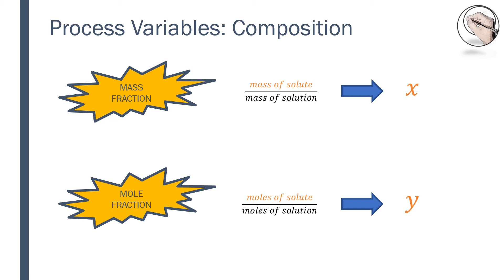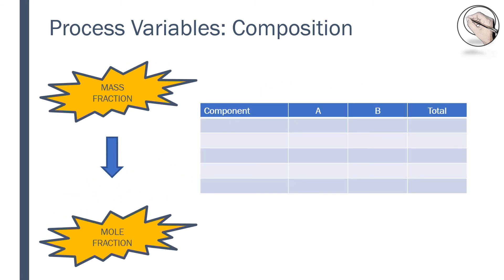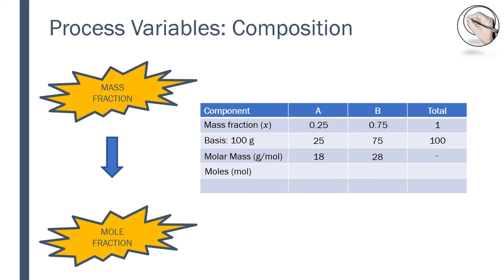Whatever naming convention you choose, just remember to stay consistent so you don't confuse yourself. You can move from a mass fraction to a mole fraction by using a table. Say you were given the mass fractions of a mixture made up of components A and B. You can assume a basis — I like to use 100 because the mass of each component is easily calculated from the fractions. Then find the molar mass of each component to find the moles. Remember that mass over molar mass yields moles. So you can say 25 divided by 18 gives 1.389 moles, and 75 divided by 28 gives 2.678 moles. Adding the moles together gives the total number of moles of the mixture. From this, you can find the mole fraction by dividing the moles of each component over the total number of moles. The total fraction should always add up to 1.